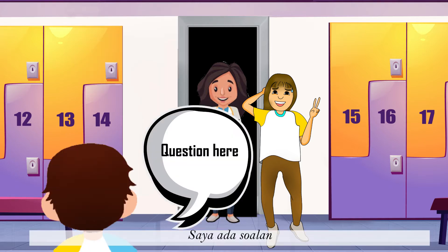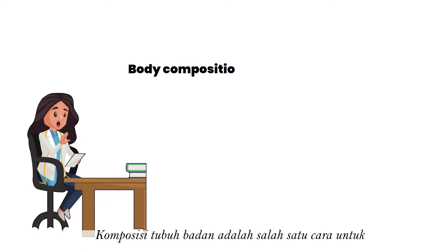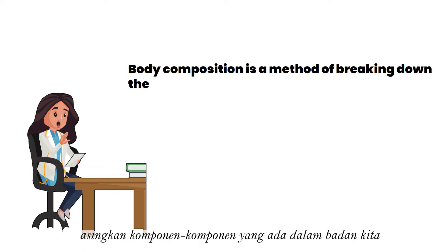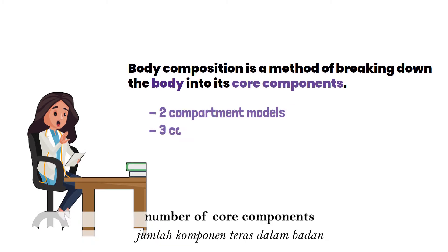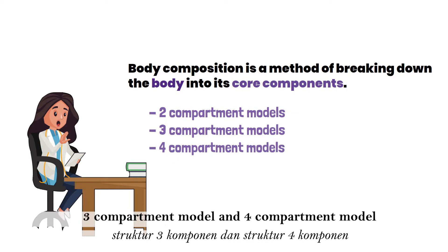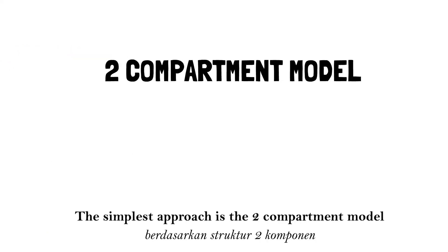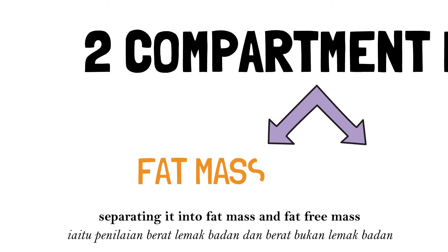Hi! Question here — what is body composition? Body composition is a method of breaking down the body into its core components. The methods to measure body composition are based on the number of core components: the two-compartment model, three-compartment model, and the four-compartment model. The simplest approach is the two-compartment model, separating it into fat mass and fat-free mass.